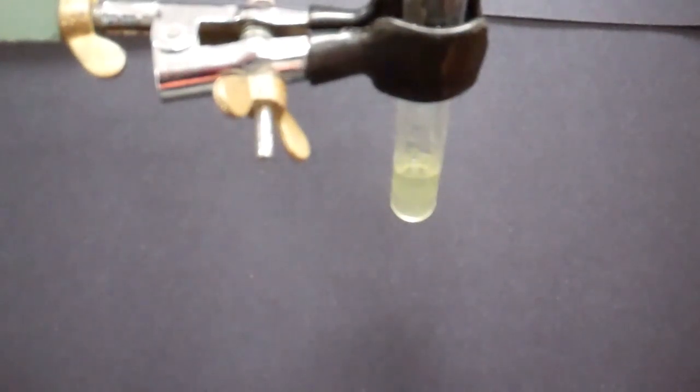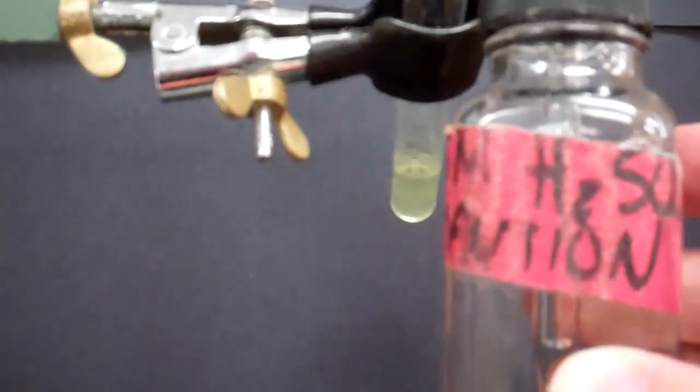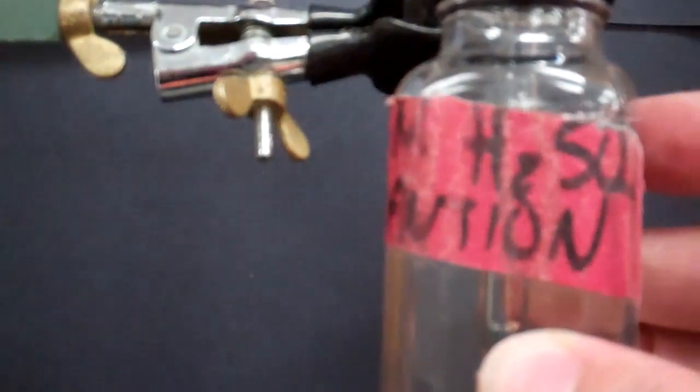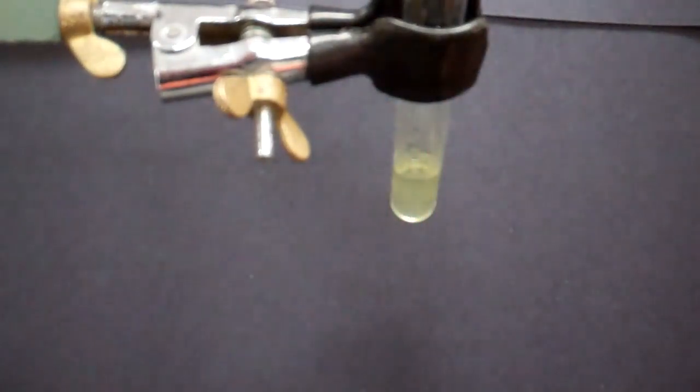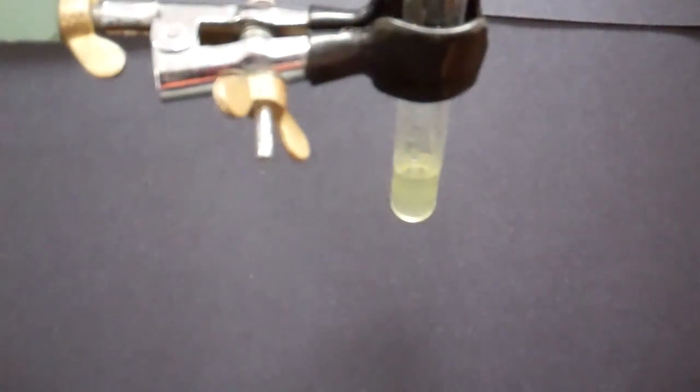In this next step, we're going to be adding 18 molar sulfuric acid located in these dropper bottle pipettes. This is a very strong concentration of this acid, so you want to be extra cautious when you are using this dropper.